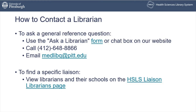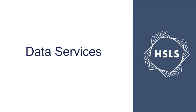If you want to talk to any of these people and you just have a general question, the Ask a Librarian form is a great way to contact us, as is the chat box. You can also call 412-648-8866 — that will go to the reference line — or email medlibq@pitt.edu, which goes to all the reference librarians. If you want to talk to a specific liaison, you can find librarians and their schools on the HSLS liaison librarians page.